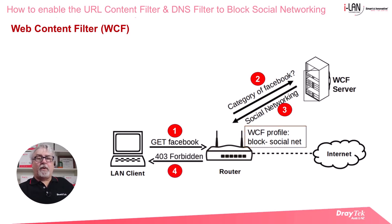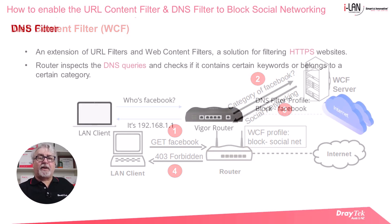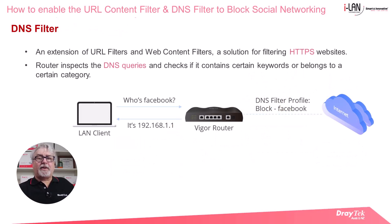Where we run into a bit of a hiccup with WCF based on URLs and keywords is with HTTPS websites. HTTPS encrypts the data and makes it difficult for the router to read, which is where the DNS filter comes into play. By tracing the DNS queries sent by the LAN clients, the router can check which websites they're trying to access.